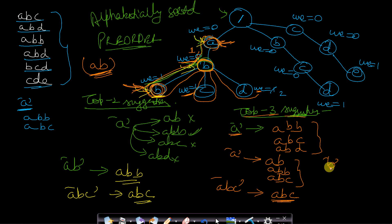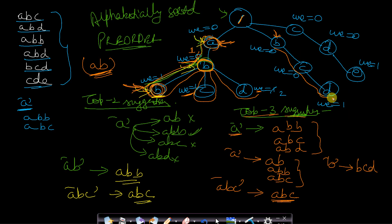If you type 'B', starting from root you go to node B. You perform pre-order traversal: reach C (word-end 0, skip), then D (word-end greater than 0) — print BCD. Backtrack through D, C, and B. Only one node with word-end greater than 0 was found. So the top-3 suggestions contain only BCD because there are no other words in the database starting with prefix B.